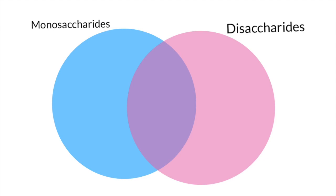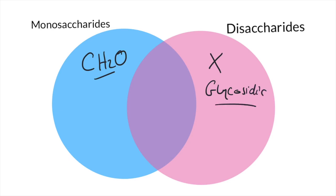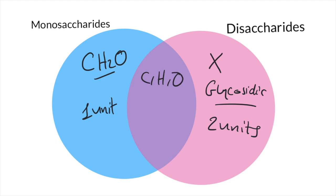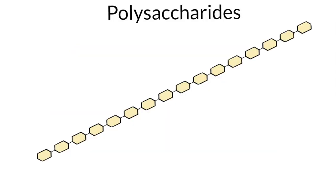We're going to do a comparison between monosaccharides and disaccharides. The first point of comparison is that monosaccharides have the unique ratio of CH2O. Since we've removed the water molecule during the condensation reaction to form disaccharides, this ratio is not present in disaccharides. Another difference is that disaccharides have a glycosidic bond, which is not found in monosaccharides. One obvious difference is that monosaccharides are made up of one unit while disaccharides are made up of two units. A similarity is that they are both made up of the same elements: carbon, hydrogen, and oxygen.